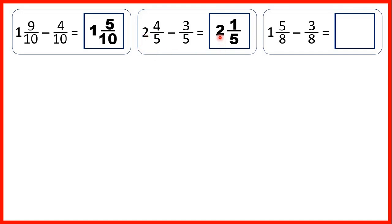Finally, 1 and 5 eighths minus 3 eighths. When we subtract fractions, the denominator stays the same, and 5 minus 3 is 2. We still have our one whole because we're not taking any wholes away, so that gives us our answer: 1 and 2 eighths.